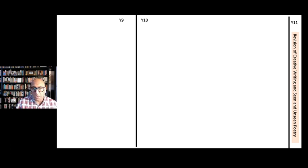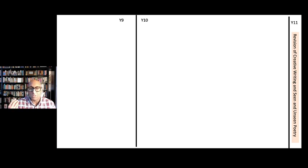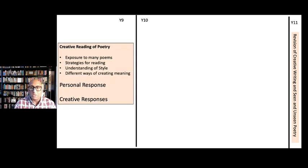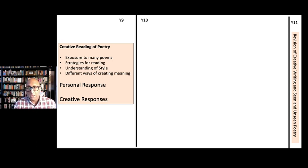Let's take a look at the kind of path we're going on. In Year 11, you'll be revising the ability to do creative writing and seen poems and unseen poems. In Year 9, for those of you in Year 9, what you'll be focusing on is just the creative reading of poetry. If you're in Year 10, you're also doing this, but you'll be going to do more things too.